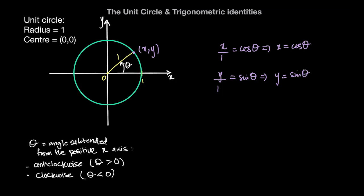Another way to visualize this is that the x coordinate of this point is the horizontal distance from the origin to this point, whereas the y coordinate is the vertical distance from the origin to this point.